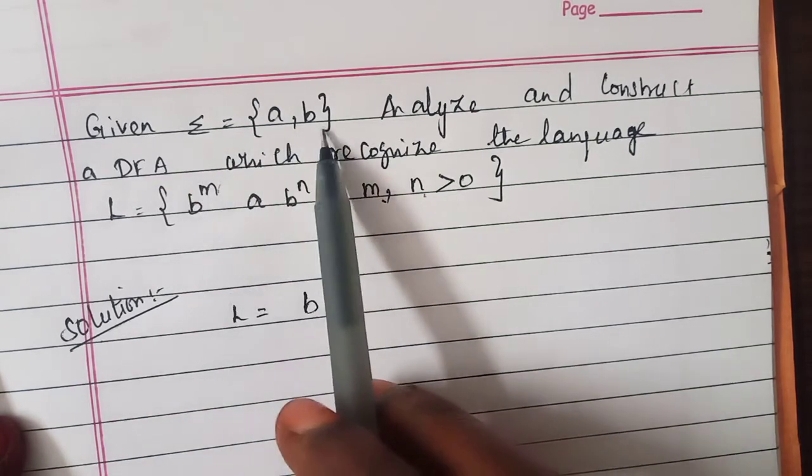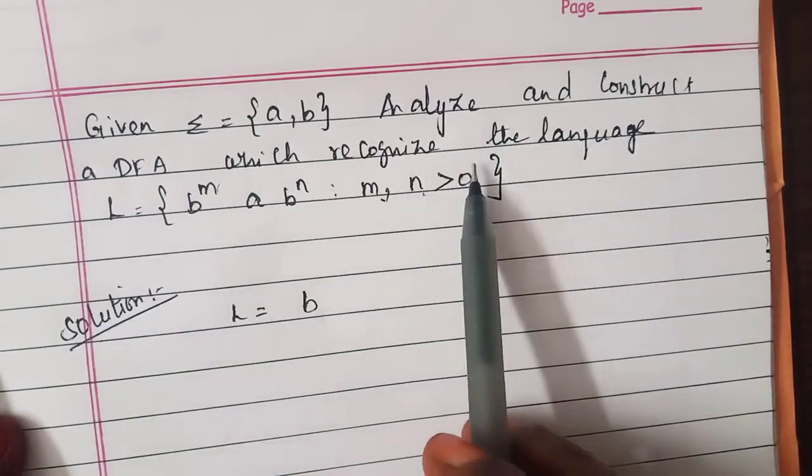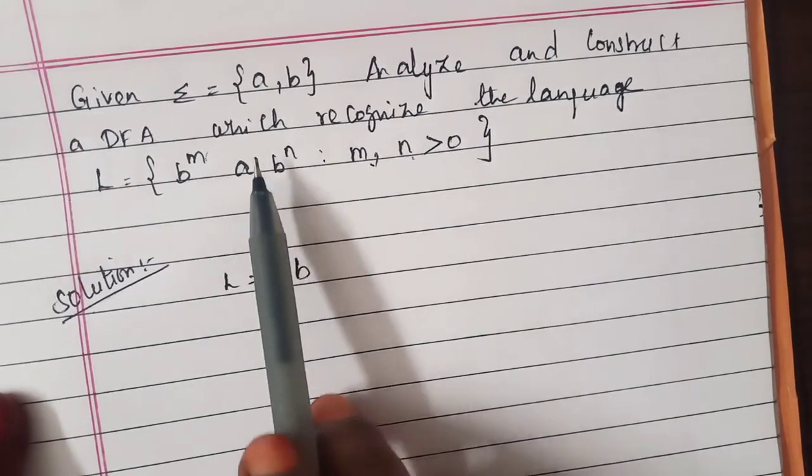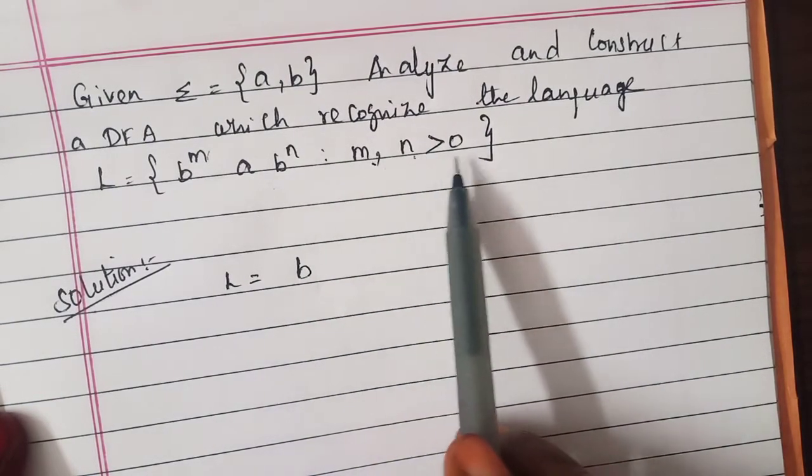Given sigma equal to a comma b, analyze and construct a DFA which recognizes the language L equal to b power m a into b power n such that m comma n is greater than 0.